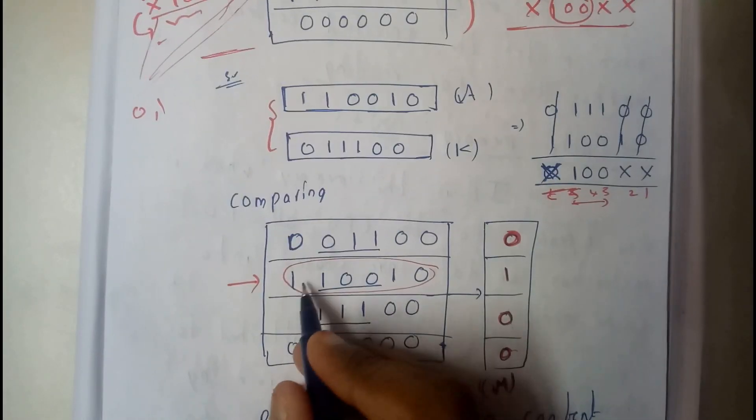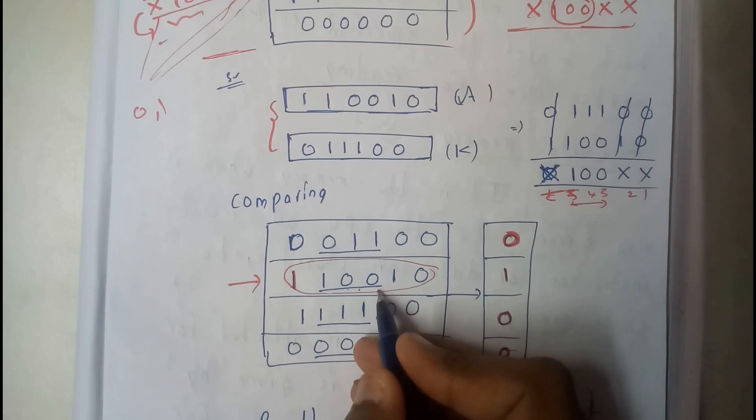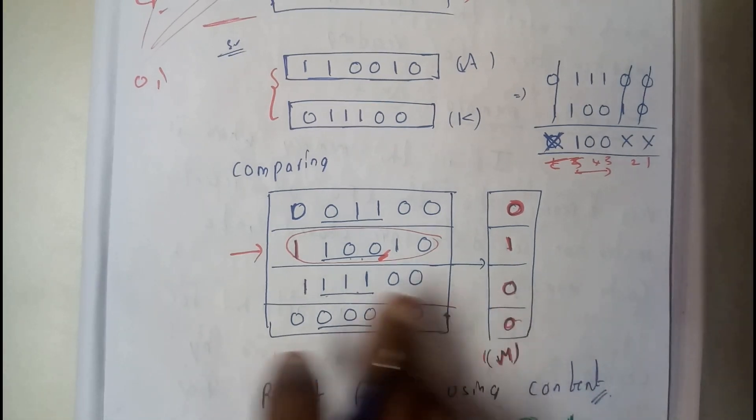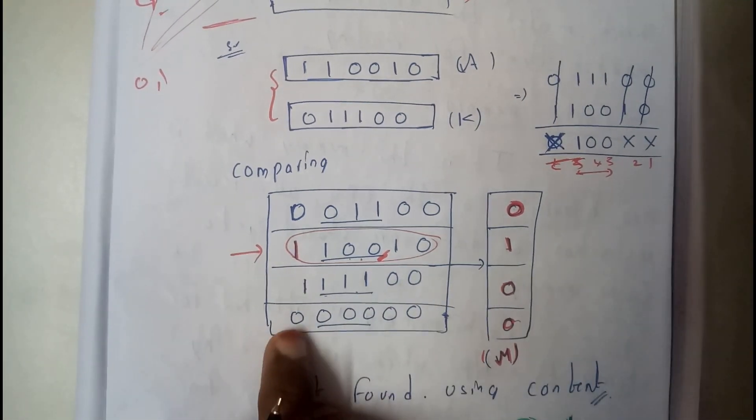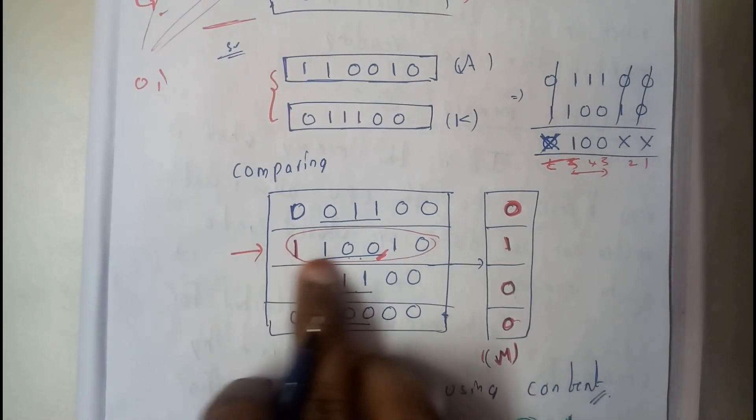So it becomes 0. Similarly here we are having 1 at starting, it's okay. After that we are having 100, it is matching. So it will be 1. Here 111 00. Here it is not 100 or 100. So it is 0. Here the 3 digits are 0s. So that is also not a match. So we found the content here.